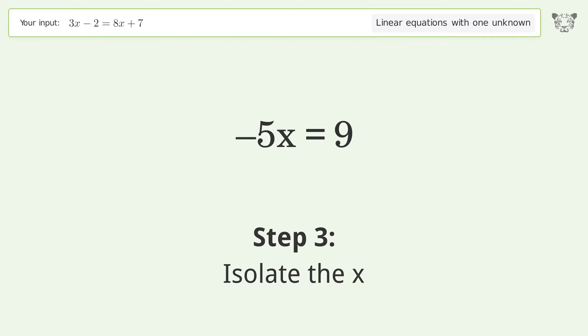Isolate the x. Divide both sides by negative 5. Cancel out the negatives.